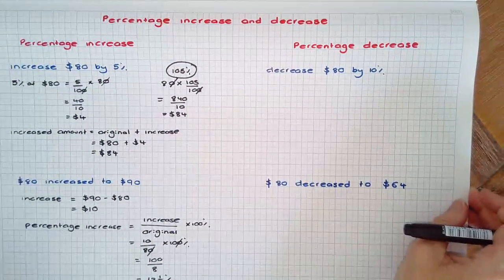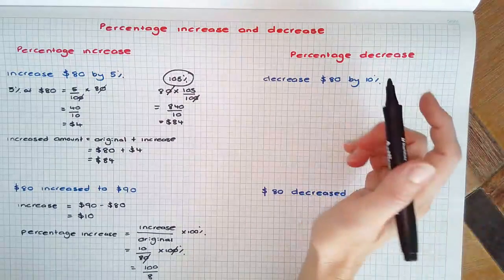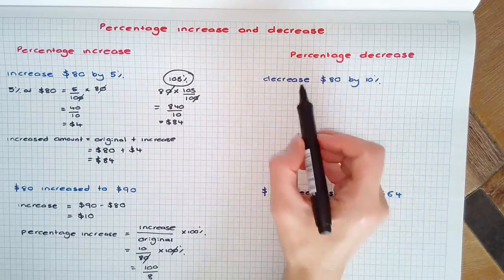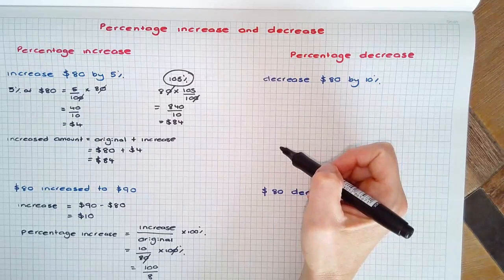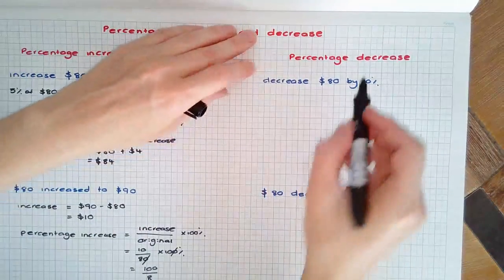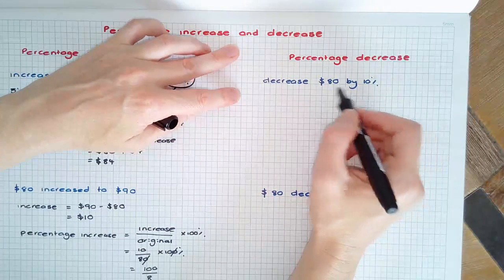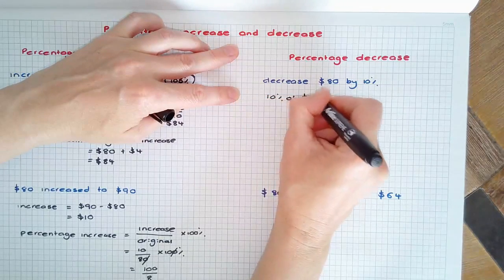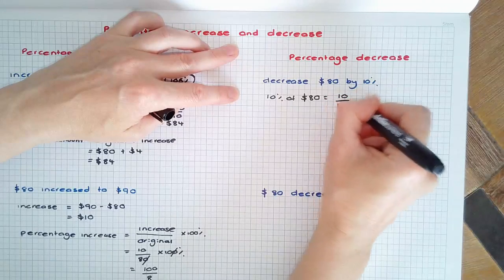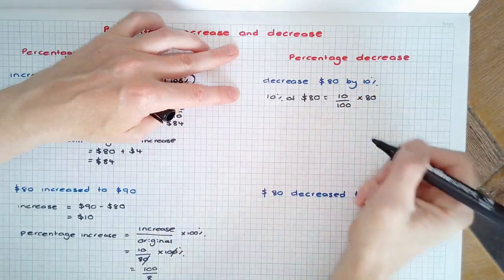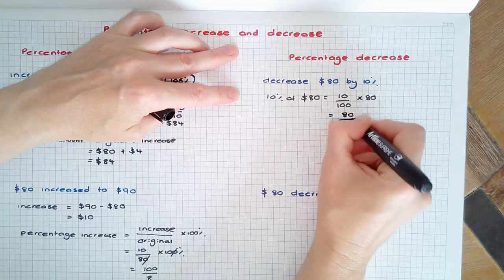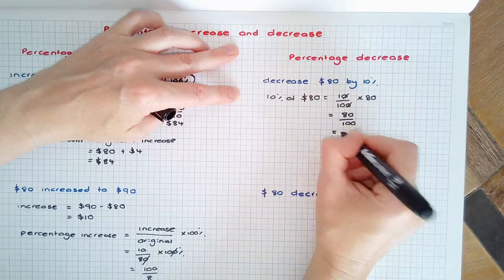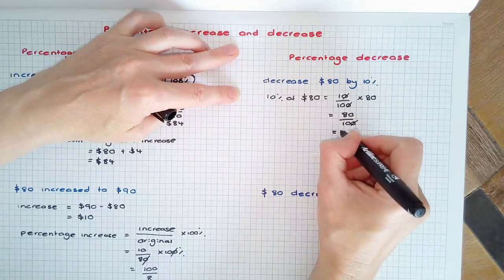Percentage decrease. Suppose a store is having a sale with percent reduction or a discount on all products. Suppose an $80 item was reduced by 10%. First of all again we need to find 10% of the $80, because 10 over 100 times the amount $80 which equals 80 over 10 equals $8.